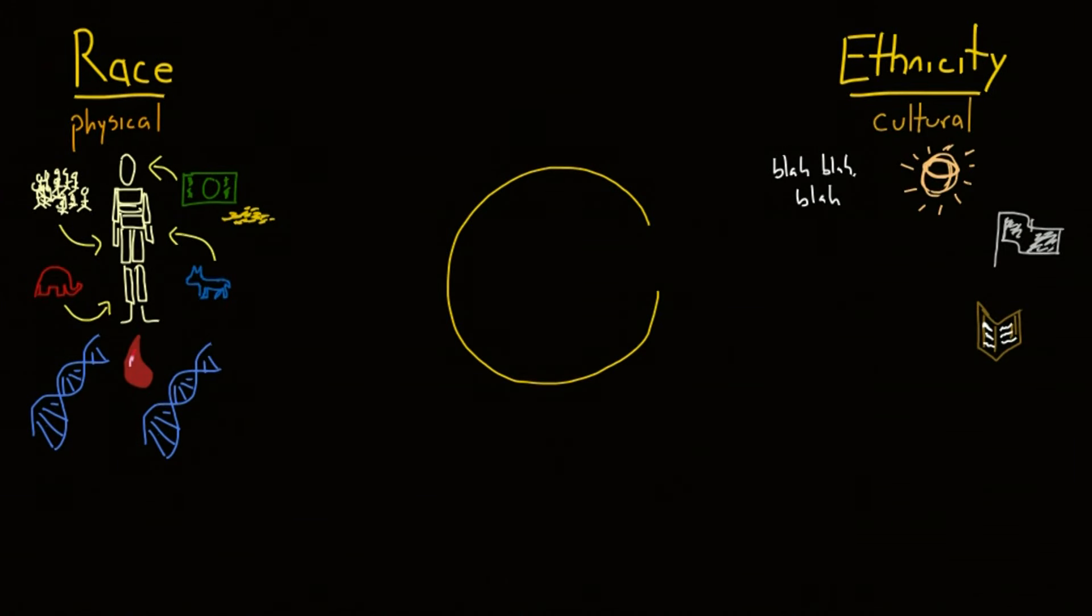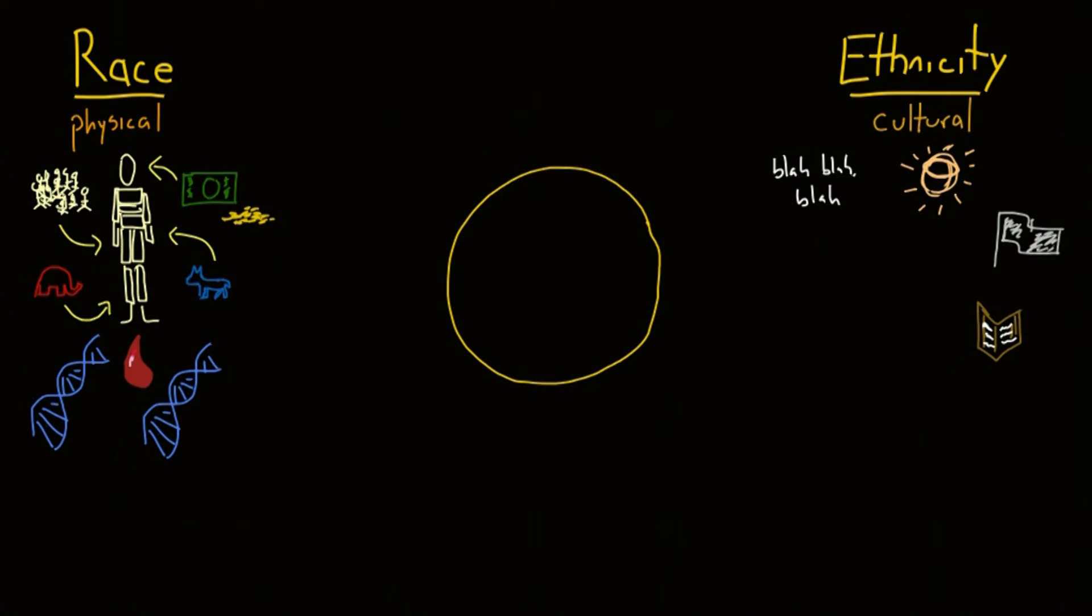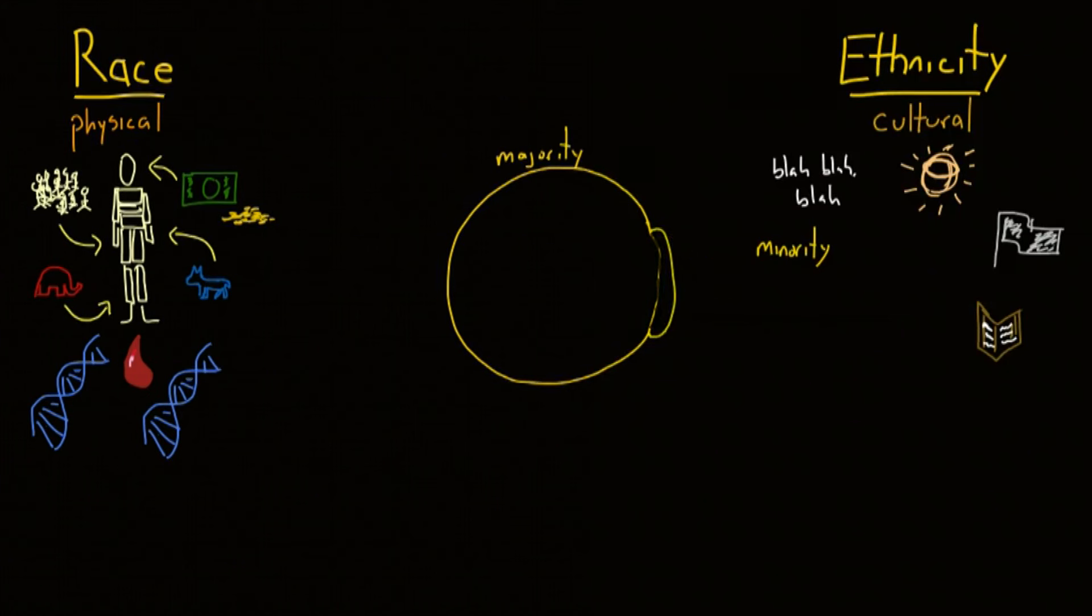Ethnic groups are less statistically defined than racial groups, and the definitions can change over time. Sometimes, the ethnic minority can even be absorbed into the majority after a generation or two.